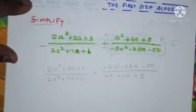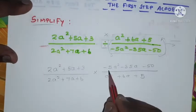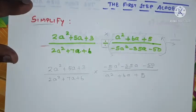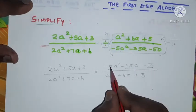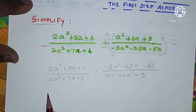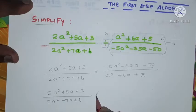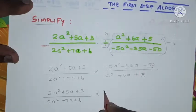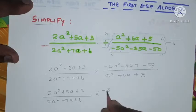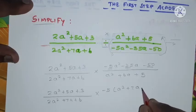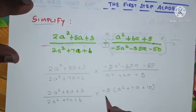We have rewritten the problem with multiplication. Now look at this term — all are multiples of 5, so I'm taking minus 5 as a common factor outside. So: 2a squared plus 5a plus 3 as it is, divided by 2a squared plus 7a plus 6, into minus 5 taken outside, leaving a squared plus 7a plus 10.